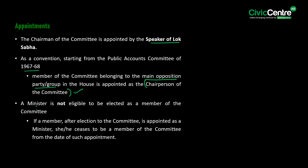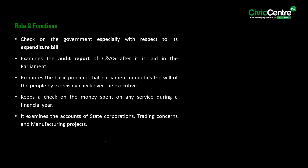A Minister is not eligible to be elected as a member of the Committee. If a member is appointed as a Minister after election to the Committee, he or she ceases to be a member from the date of such appointment. The roles and functions include: checking government expenditure; examining the audit report of the CAG after it is laid in Parliament; promoting parliamentary check over the Executive; keeping check on money spent during a financial year; and examining accounts of state corporations, trading concerns, and manufacturing projects.